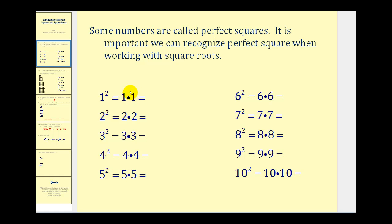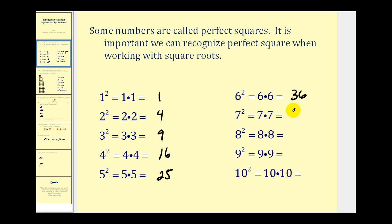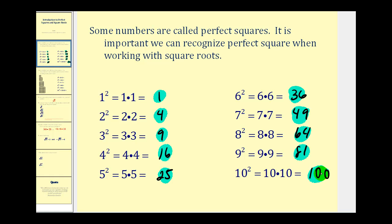We can expand them: one squared equals one times one, or one; two squared is equal to two times two, or four; three squared is three times three, or nine; then sixteen, twenty-five, and over on the right we have thirty-six, forty-nine, sixty-four, eighty-one, and one hundred. So all of these are considered perfect squares.